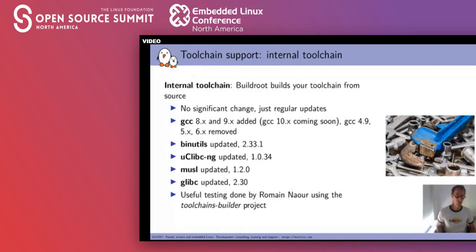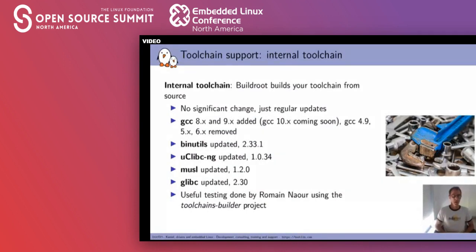These architectures need to be supported by a toolchain so we can cross-compile code. We have two toolchain backends in BuildRoot. The first is the internal toolchain backend, which allows BuildRoot to build its own toolchain from source. We haven't had a lot of significant changes there — mainly regular updates: we updated GCC to GCC 8 and GCC 9, with patches for GCC 10 coming soon. We've removed support for older versions like GCC 4, 5, and 6. Binutils was updated and the three C libraries — uClibc-ng, musl, and glibc — have all been updated. We do some really nice testing of these toolchain capabilities using the toolchain-builder project, where Roman Naour from Smile does a lot of QA and CI work.